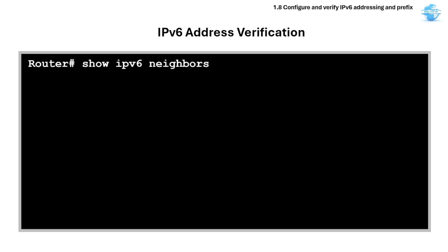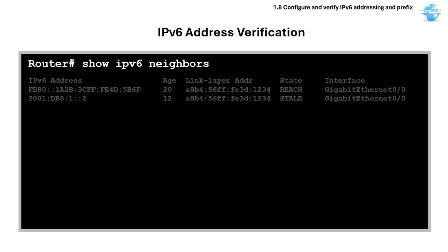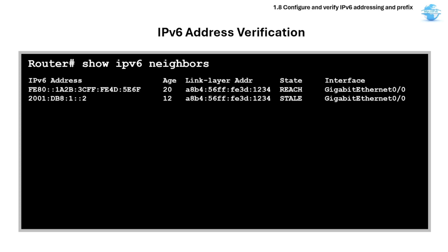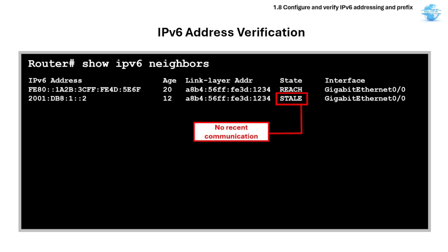The 'show ipv6 neighbors' command verifies neighbors, which is similar to ARP in IPv4. Similar to the IPv4 ARP table, this shows the IPv6 to MAC address mapping. The state field examples include 'reach,' where the neighbor is reachable, or 'stale,' where there is no recent communication and it is waiting for traffic to re-verify. This is also useful for troubleshooting connectivity between devices.